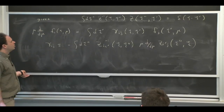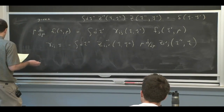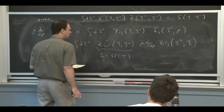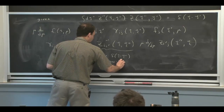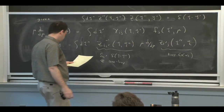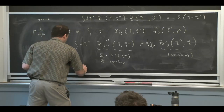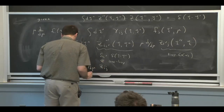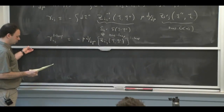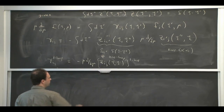At one loop things are simpler, because at one loop we can just replace Z by delta_{ii'} times Kronecker delta at one loop. At one loop we just need the order-alpha piece from Z, and then we can set the tree level for that other guy. So at one loop, which is all we're going to do, we get a simpler formula. That's our setup, and now we want to calculate the anomalous dimension by calculating the 1/epsilon times alpha term in the Z_{ij}.